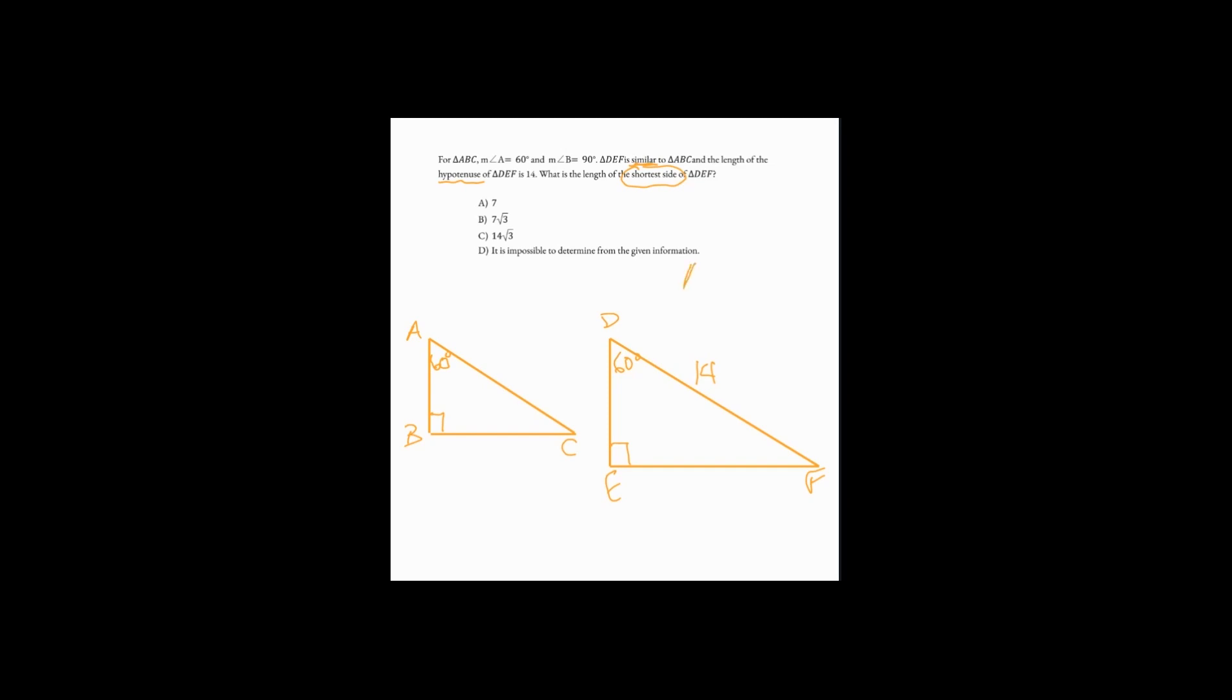And if we remember that the sum of the angles of a triangle add up to 180 degrees, we'll be able to assess what the third angle of each triangle is. You may have gotten there already. And you may notice that we have here a special right triangle.